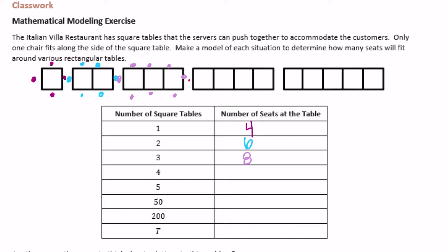Four tables would be one, two, three, four, five, six, seven, eight, nine, ten. And then five would be one, two. And what I'm starting to notice is that there's always two on the outside, and then two for every table. So that's 12.